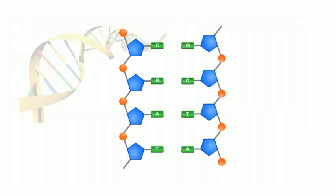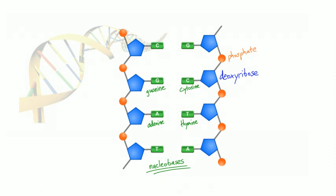DNA is made up of two strands in a double helix. The backbones are made of deoxyribose linked by phosphate groups, and in between the two backbones, like the rungs on a ladder, are the bases: adenine, guanine, cytosine, and thymine. In RNA, instead of thymine you have uracil.